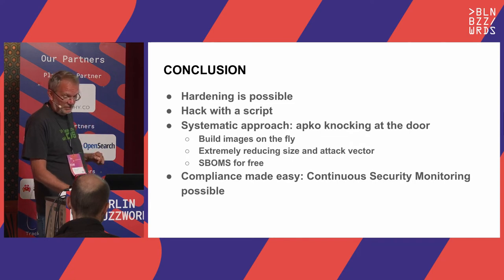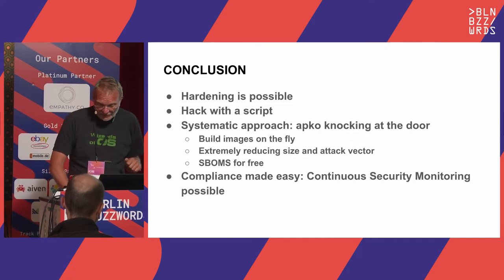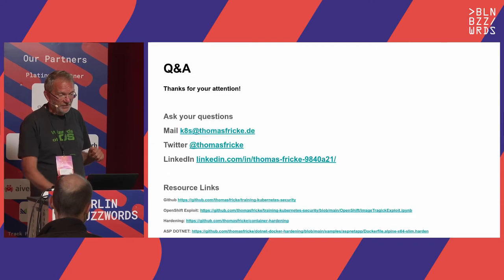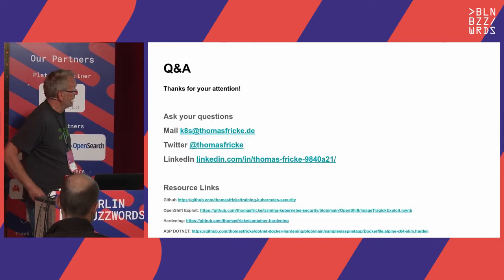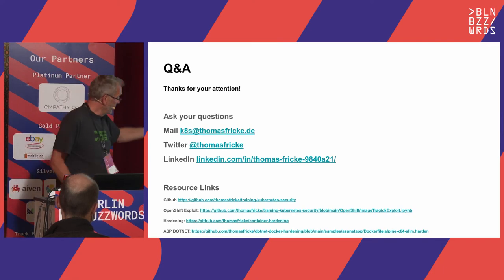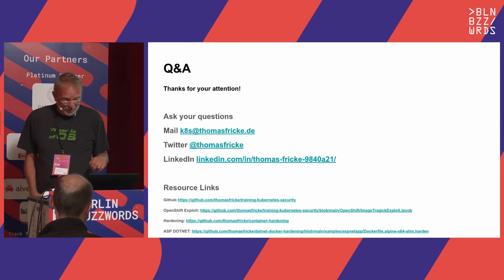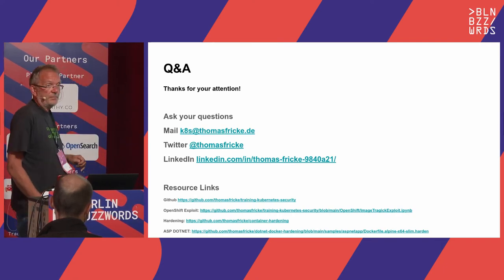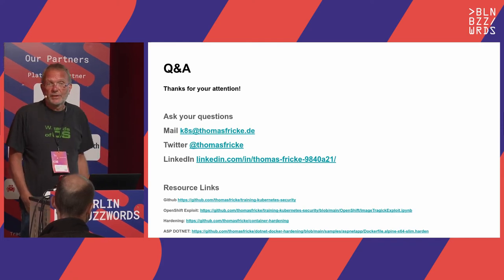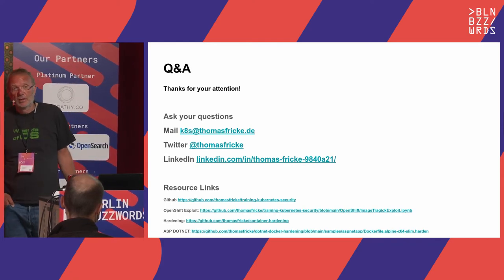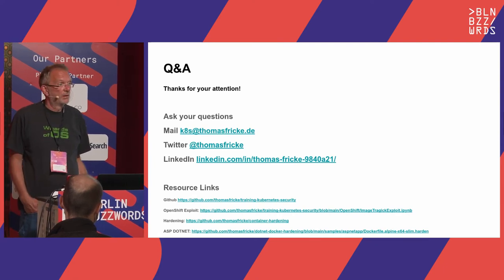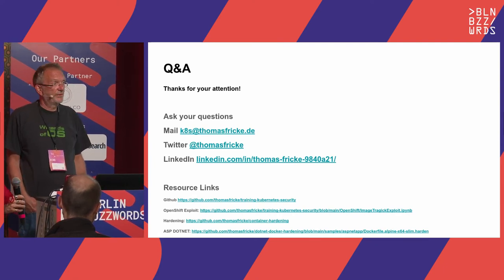Conclusion: hardening is possible — I've shown you how to do it with a script. There's a systematic approach like Apko knocking at the door; it's not fully ready yet and you may need other base images than Alpine, though Alpine is going very far and they are also implementing it for Debian. It is extremely reducing the size and attack vector of an image, you get SBOMs for free, and continuous security monitoring is possible and easy. That's all I wanted to tell you — here are the links, they'll all be in the PDF, and if you need more information or if I should hack systems for you, just contact me.